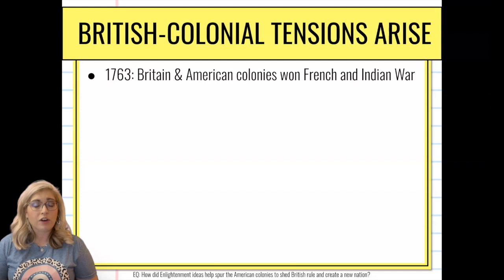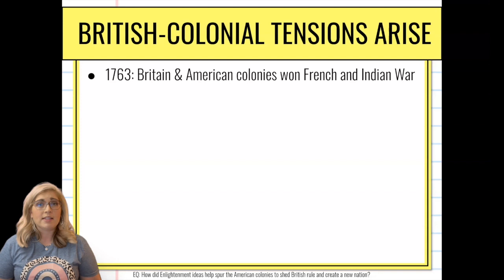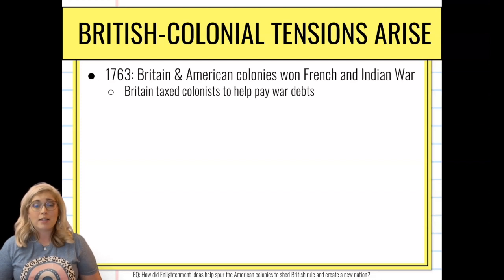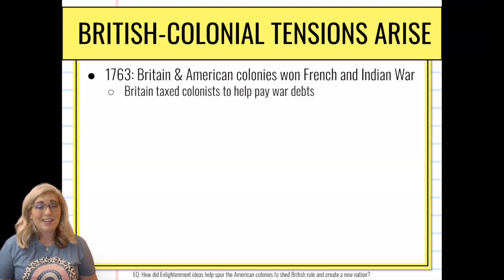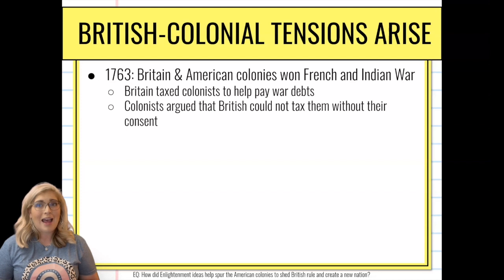Tensions are also going to arise after the French and Indian War. The colonists helped the British in 1763 win the French and Indian War — a war against the French and the Native American population who had teamed up against Britain and its colonies. Wars aren't free and they're not cheap, so in order to pay for the war debts, Britain decides to tax its colonists. The colonists aren't very happy about that.